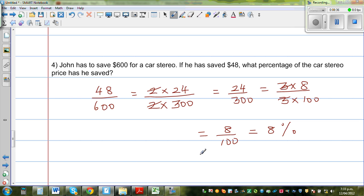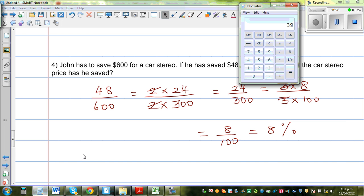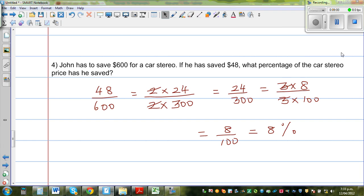If you have a calculator and if you are allowed a calculator, this is how you do without doing this mental calculation. You go 48 divided by 600. That is 0.08, and this is a decimal. If you want to write this out of 100, this is out of 1, so times this by 100. That is 8%.